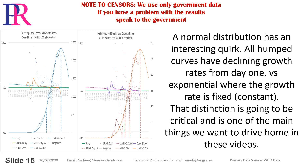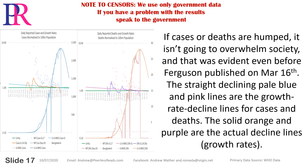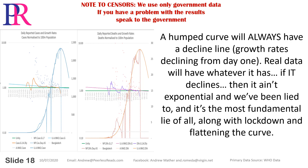A normal distribution has an interesting quirk: all humped curves have declining growth rates from day one, versus exponential, where the growth rate is fixed or constant. That distinction is going to be critical. If cases or deaths are humped, it isn't going to overwhelm society, and that was evident even before Ferguson published on March 16th. The straight declining pale blue and pink lines are the growth rate decline lines for cases and deaths. The solid orange and purple are the actual decline lines, or growth rates. A humped curve will always have a decline line — growth rates declining from day one. Real data will have whatever it has. If it declines, then it ain't exponential, and we've been lied to — it's the most fundamental lie of all, along with lockdown and flattening the curve.